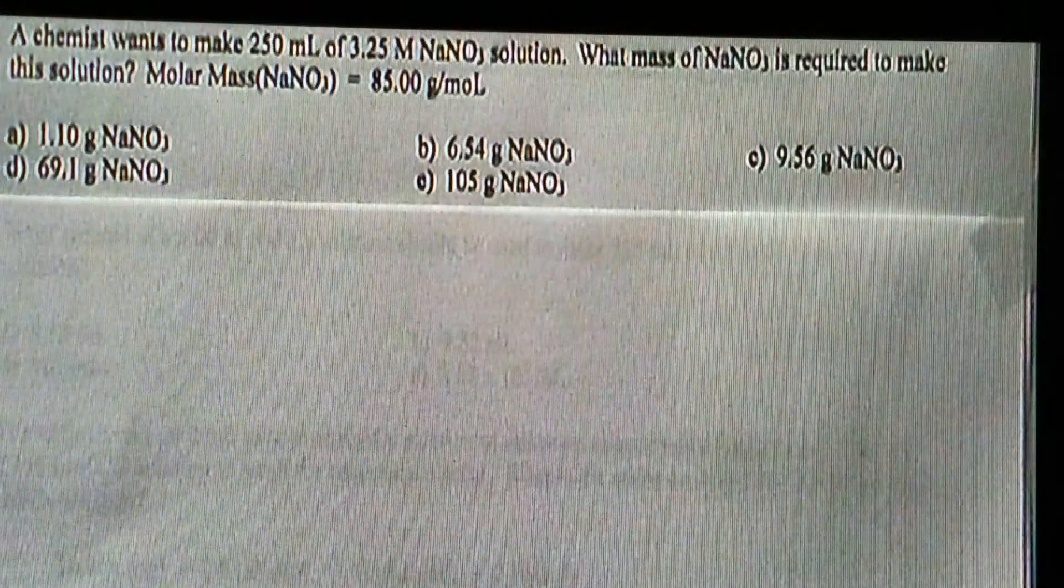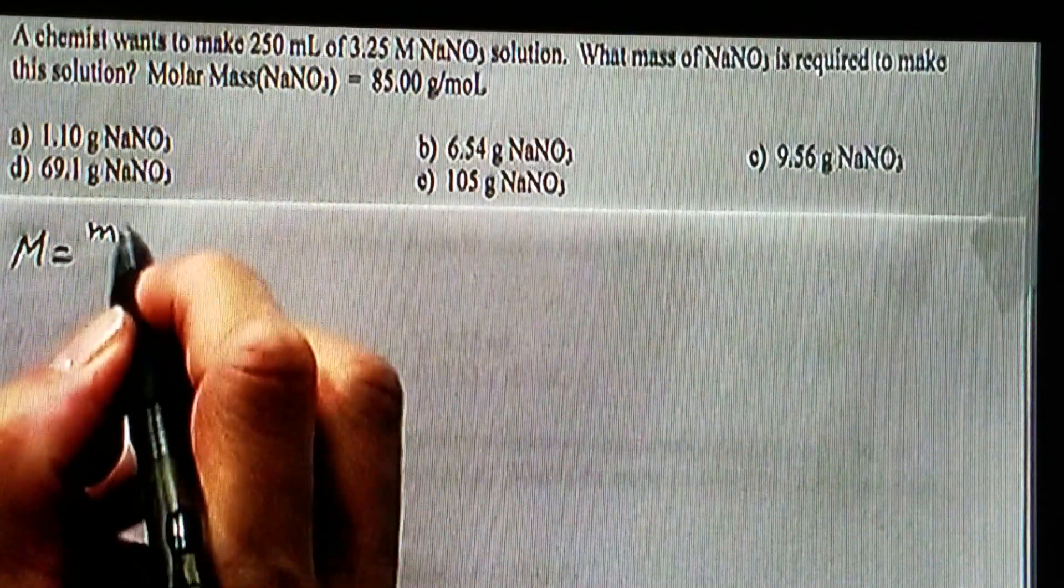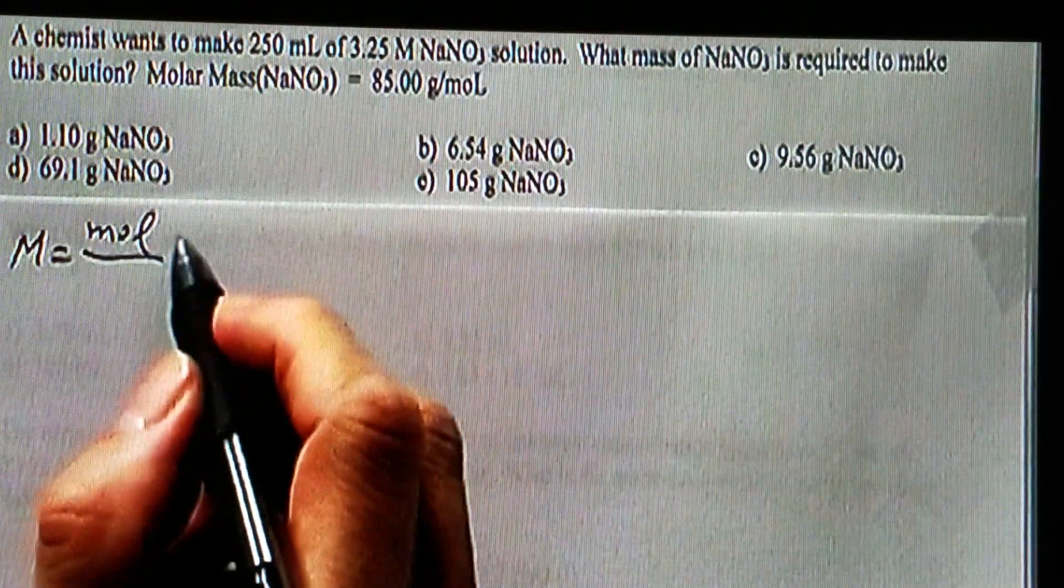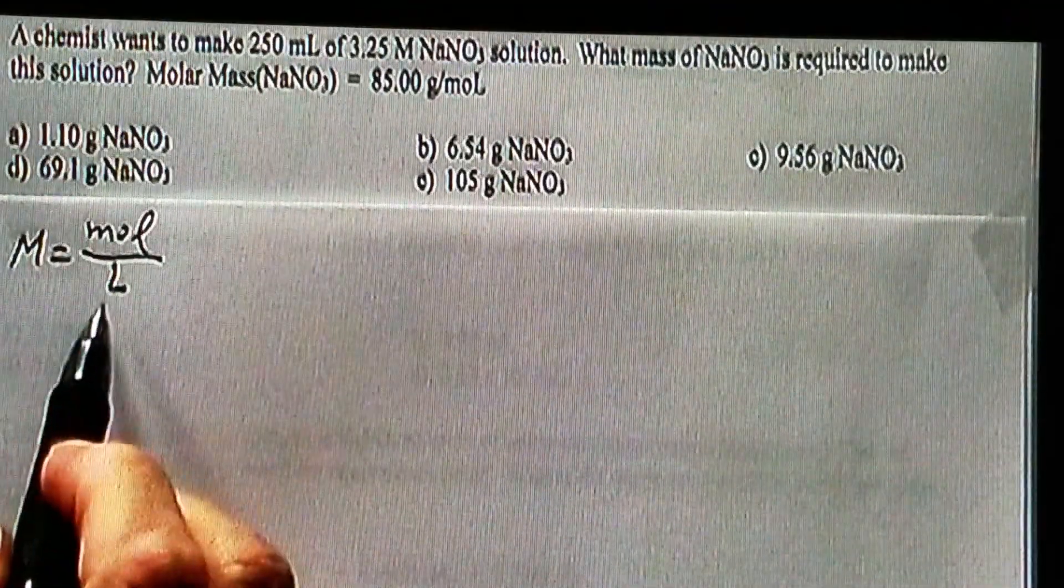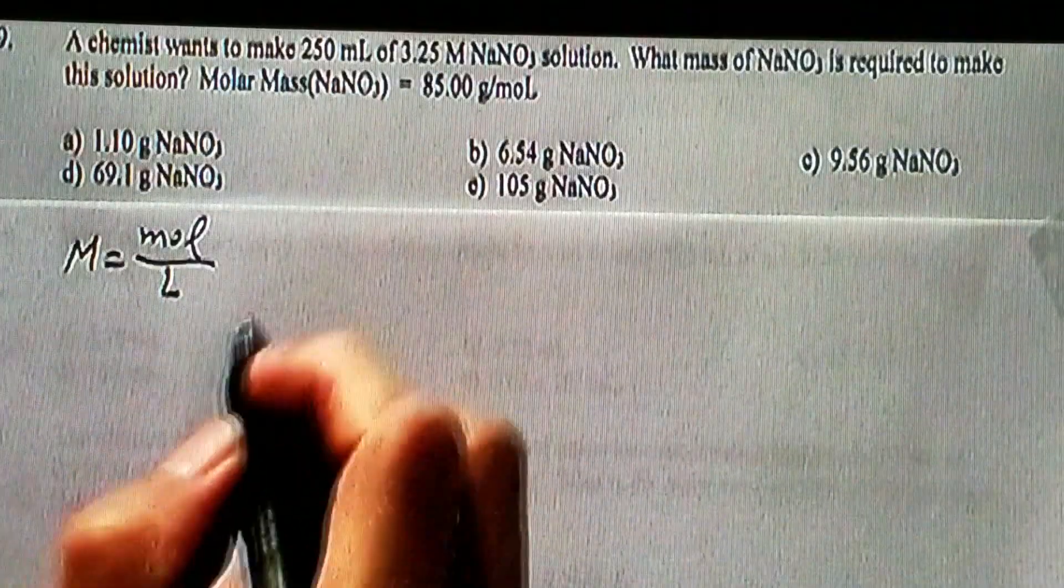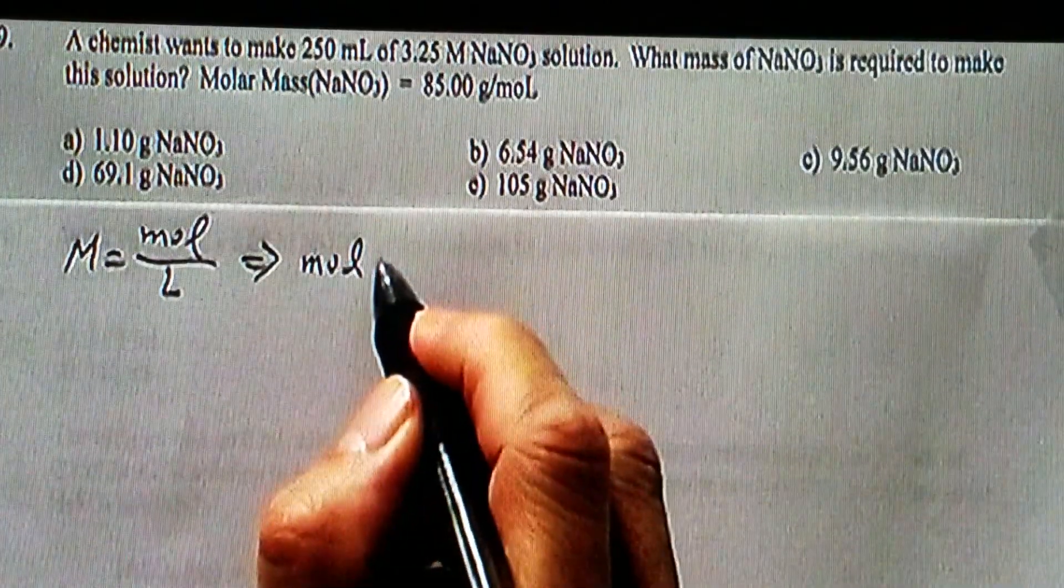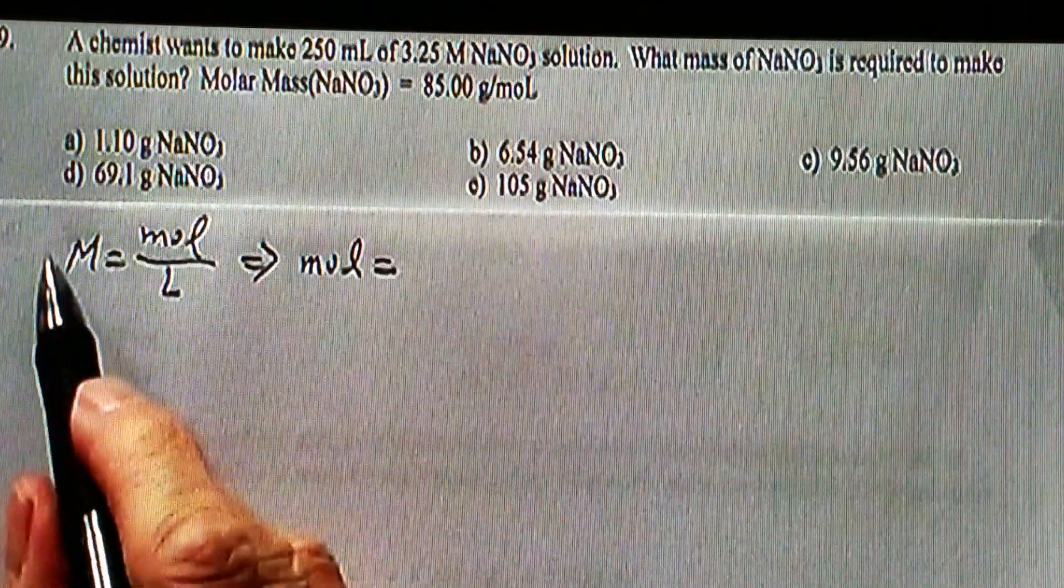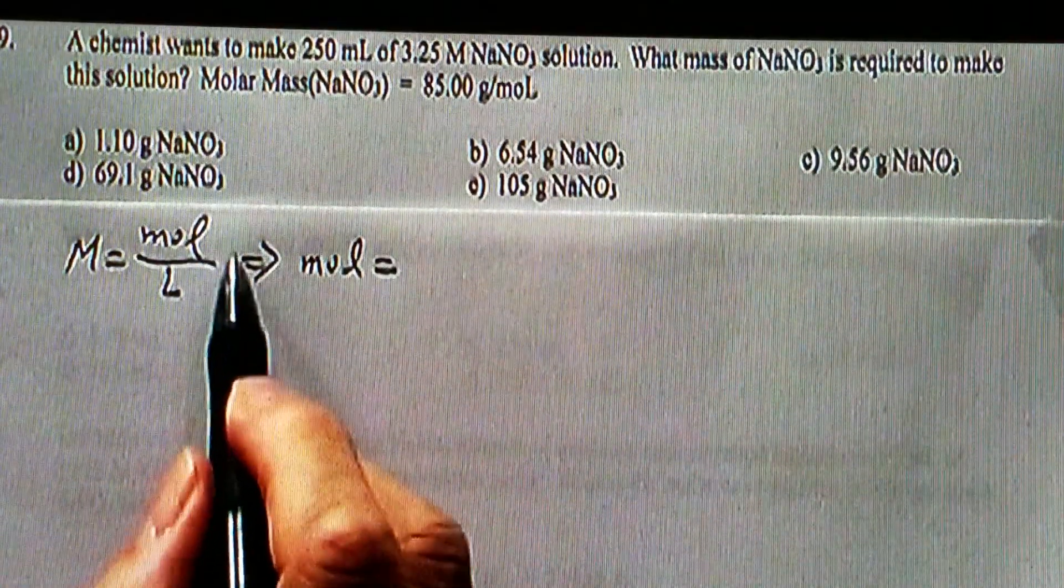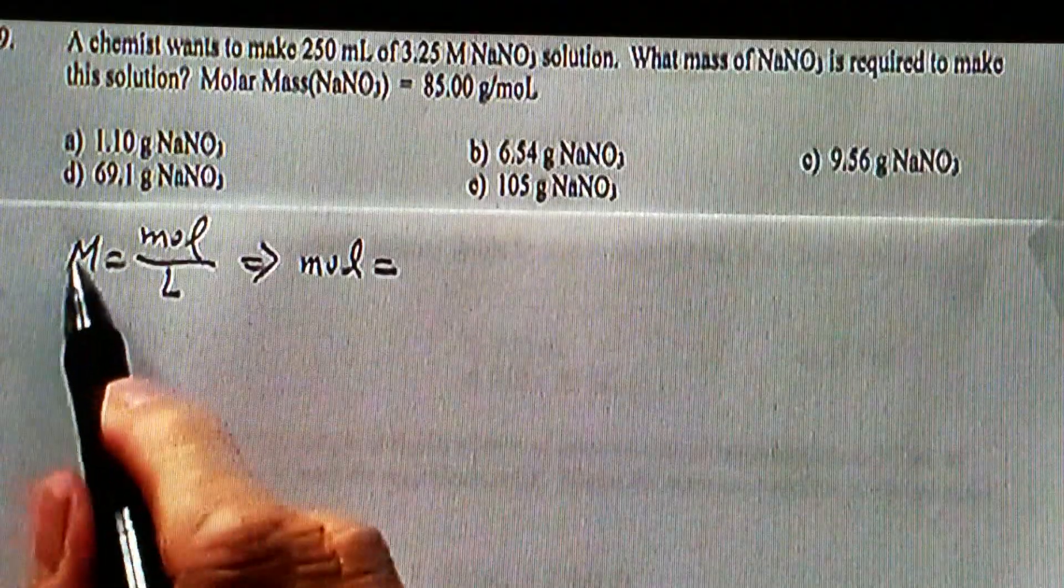The key equation for molarity is moles of the solute divided by the liters of solution. From this equation, we can find out the moles of solute. We move the L to the other side - there are liters on both sides. On the left-hand side that should be cancelled, and on the right-hand side you just copy it up.